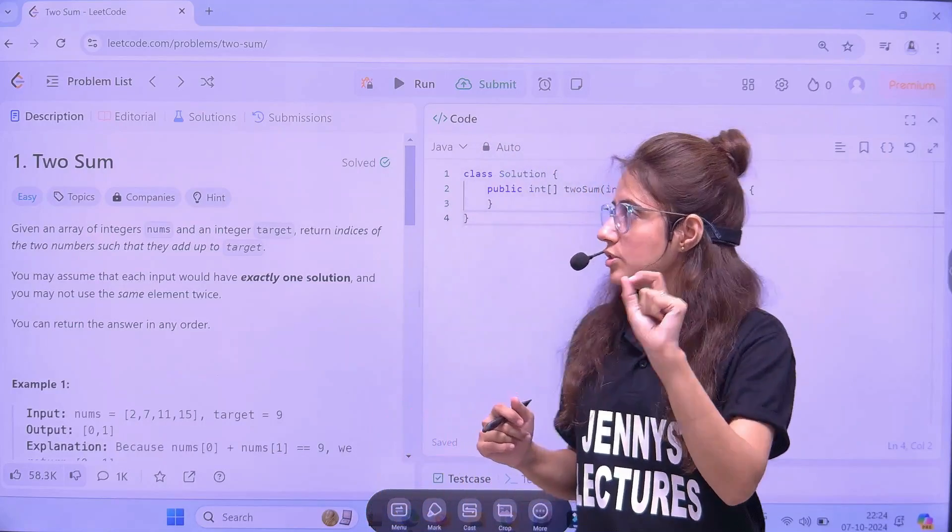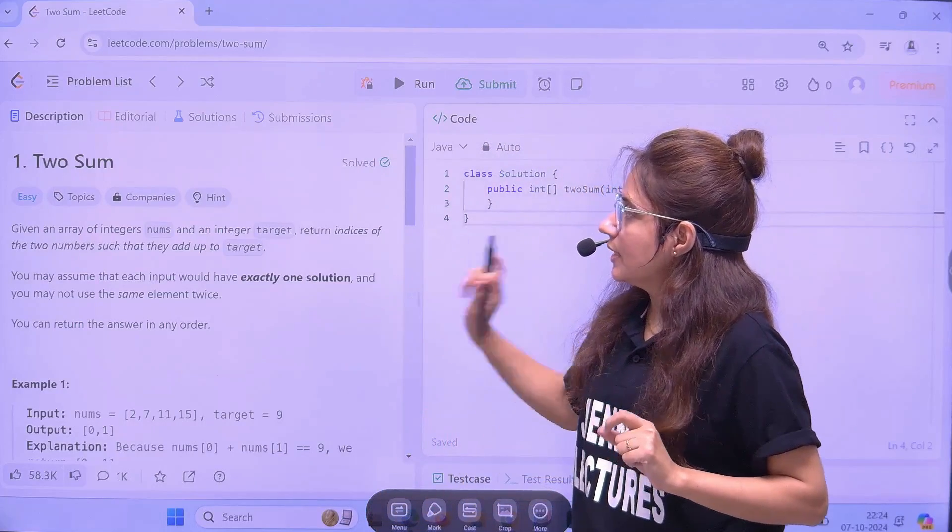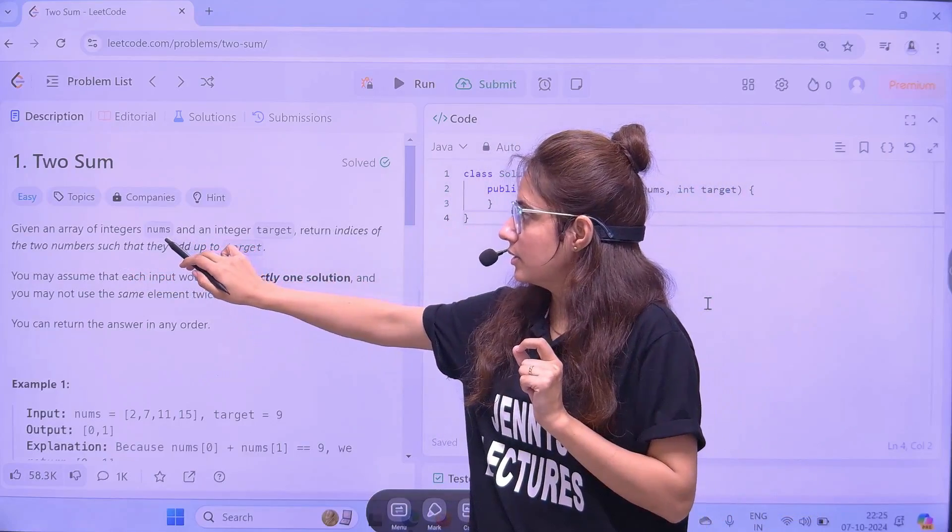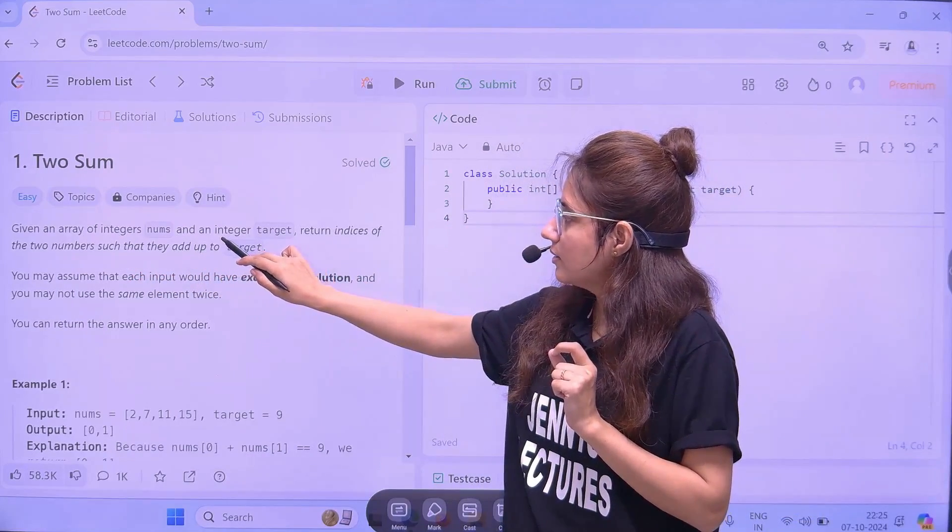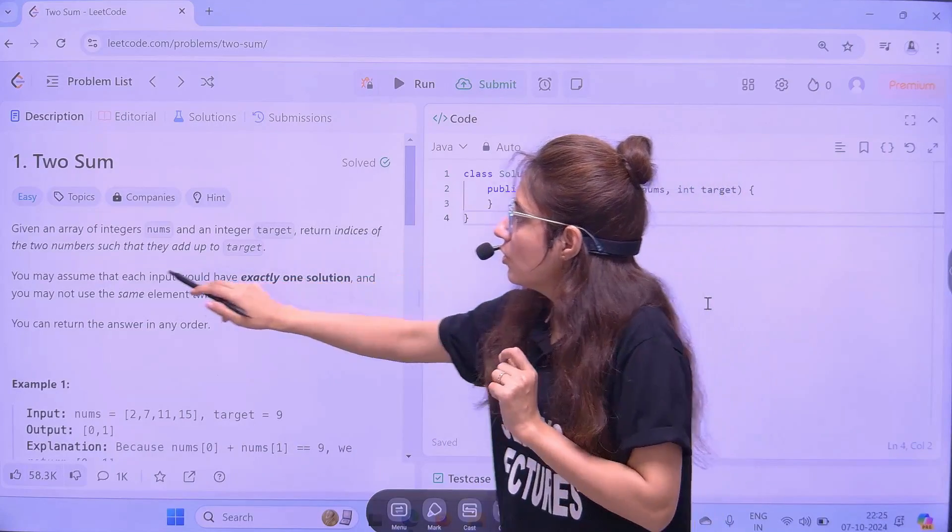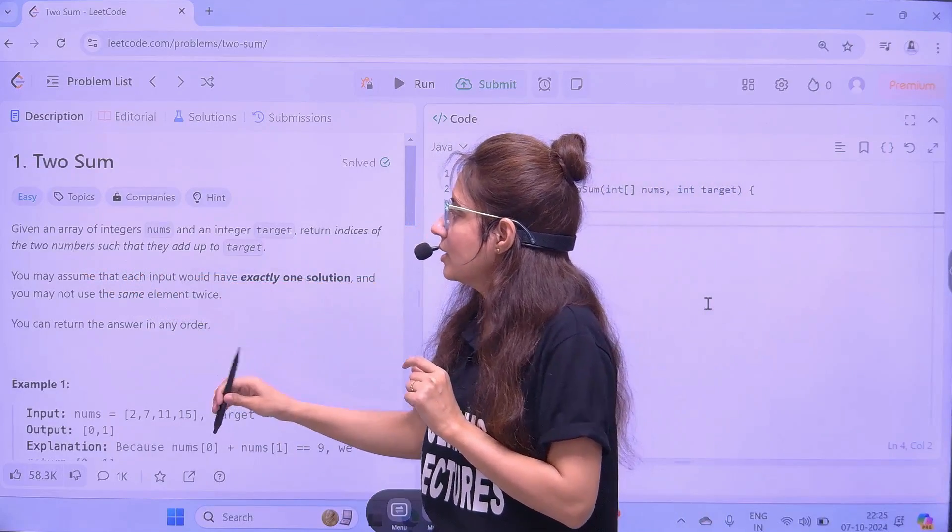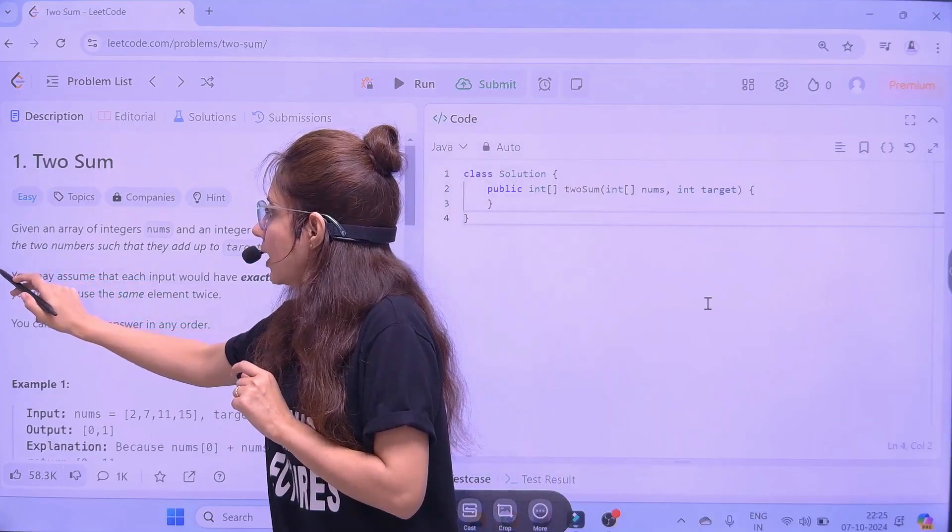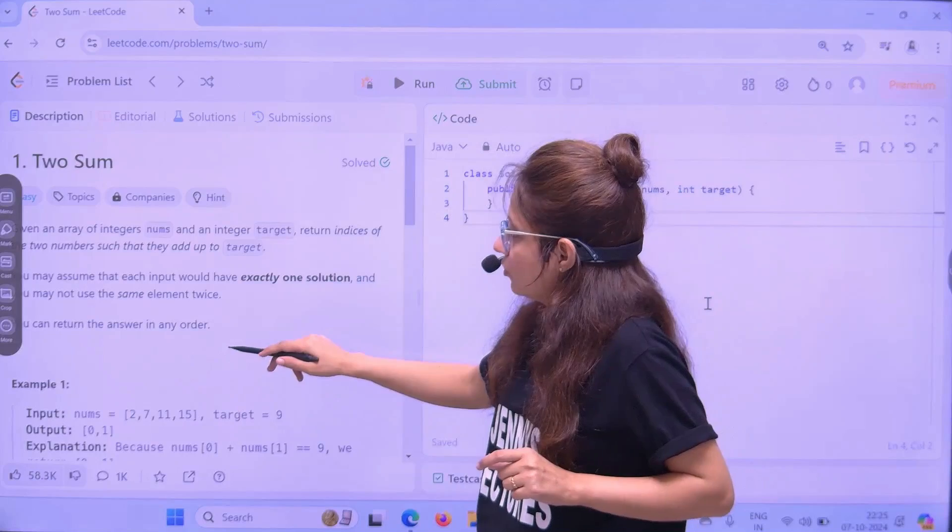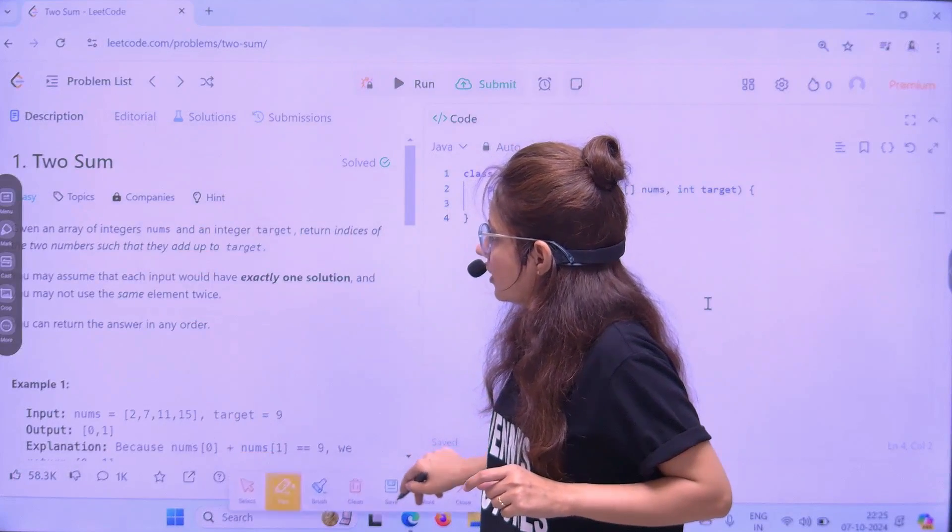And that is the Two Sum problem. So the question given is, you are given an array of integers, the name is num and an integer target. You have to return indices of the two numbers such that they add up to the target.